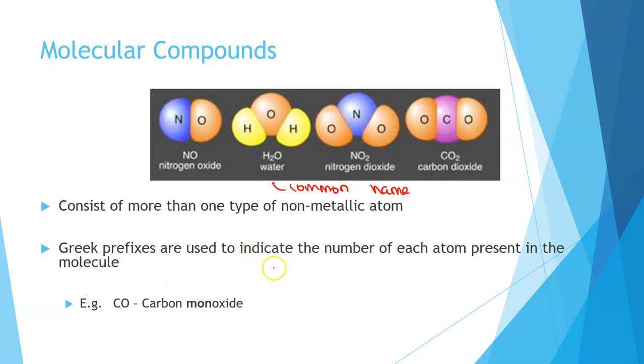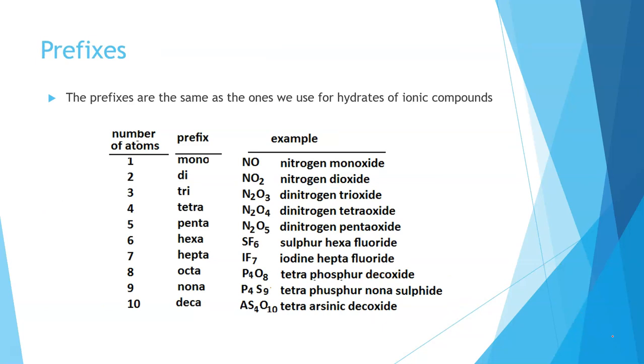We use the Greek prefixes to indicate the number of each atom present in the molecule. These will be mono, di, tri, tetra, penta, and then we have hexa for six, hepta for seven, octa for eight, and then nona for nine, and then deca for ten. So these will be same as the ones that you're used to in maths as well.